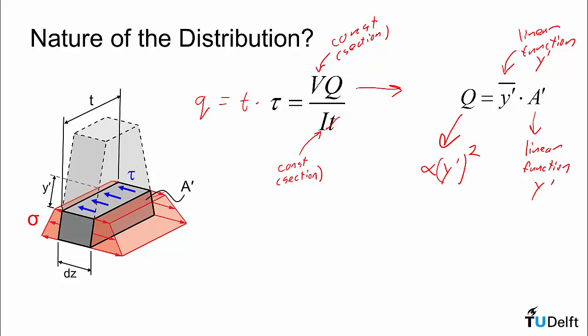So that means that Q is proportional to y prime squared, so it should be a parabolic distribution. And because V is constant and I is constant, our shear flow should have a parabolic distribution. So that's one thing we can already say.